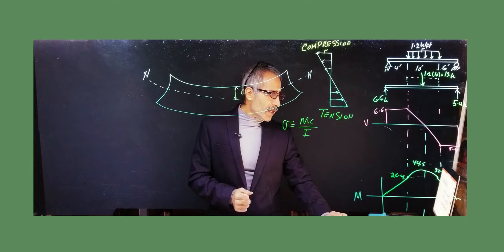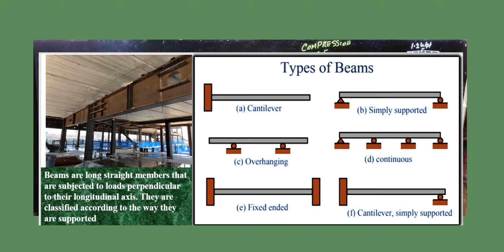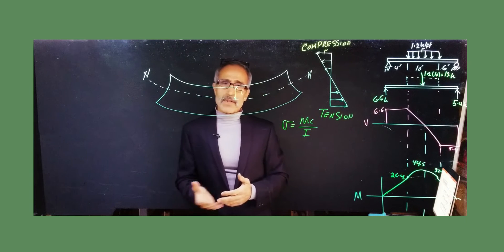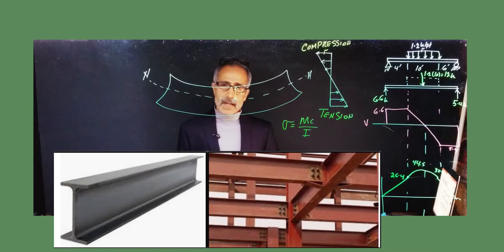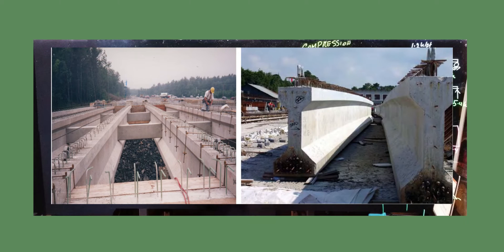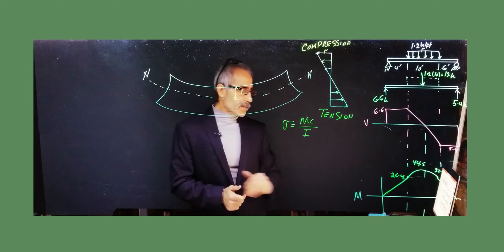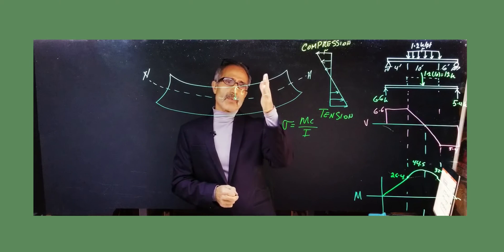Beams are classified by the way they are supported: cantilever, simply supported, continuous span, fixed-ended, overhanging, and combinations. They are also made from different materials — steel I-beams, concrete beams, and timber beams. Each material type has its own design criteria and steps, but here we're going to learn the basic design approach for a simple beam.